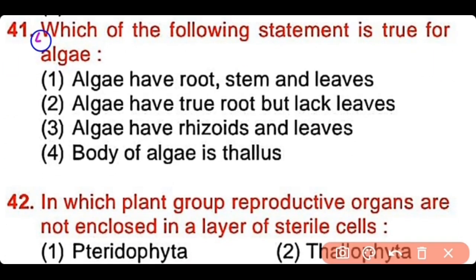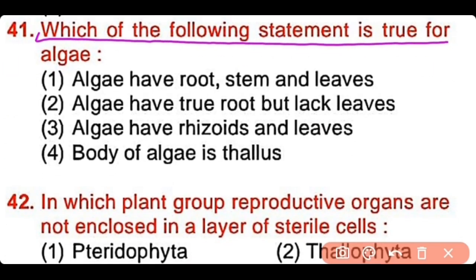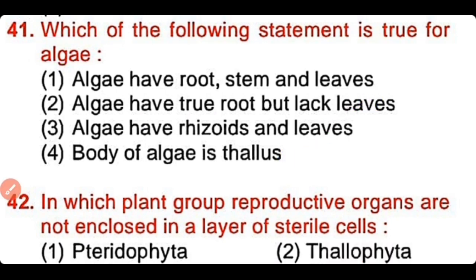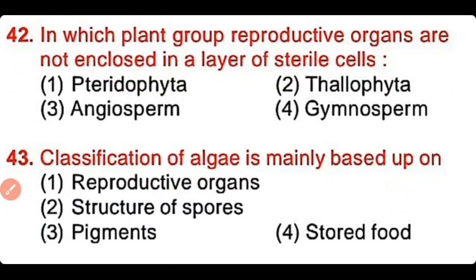Question number 41: Which of the following statements is true for algae? Algae have root, stem and leaves; algae have true roots but lack leaves; algae have rhizoids and leaves; or the body of algae is thallus? The correct answer is option 4. The body of algae is thallus.